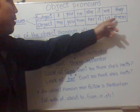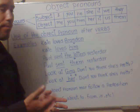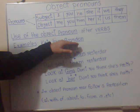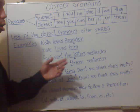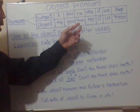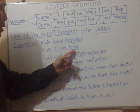We use the object pronoun after verbs. Look at example number one: Kate loves Brandon. In example number one, I'm using a proper name. Brandon is a proper name, but I can use an object pronoun instead and say Kate loves him.